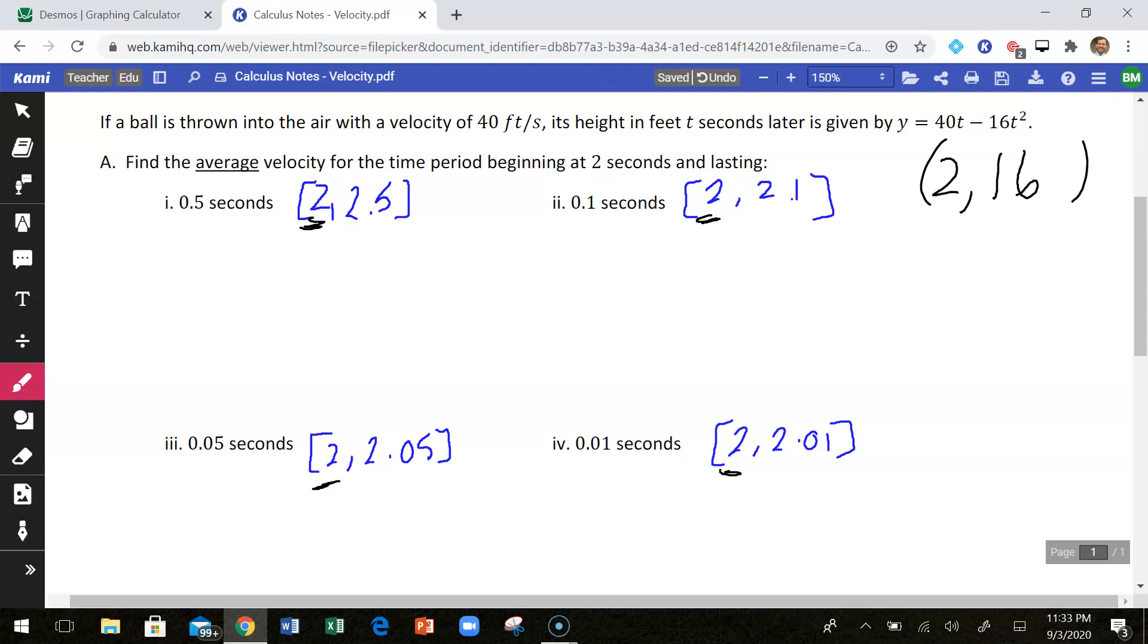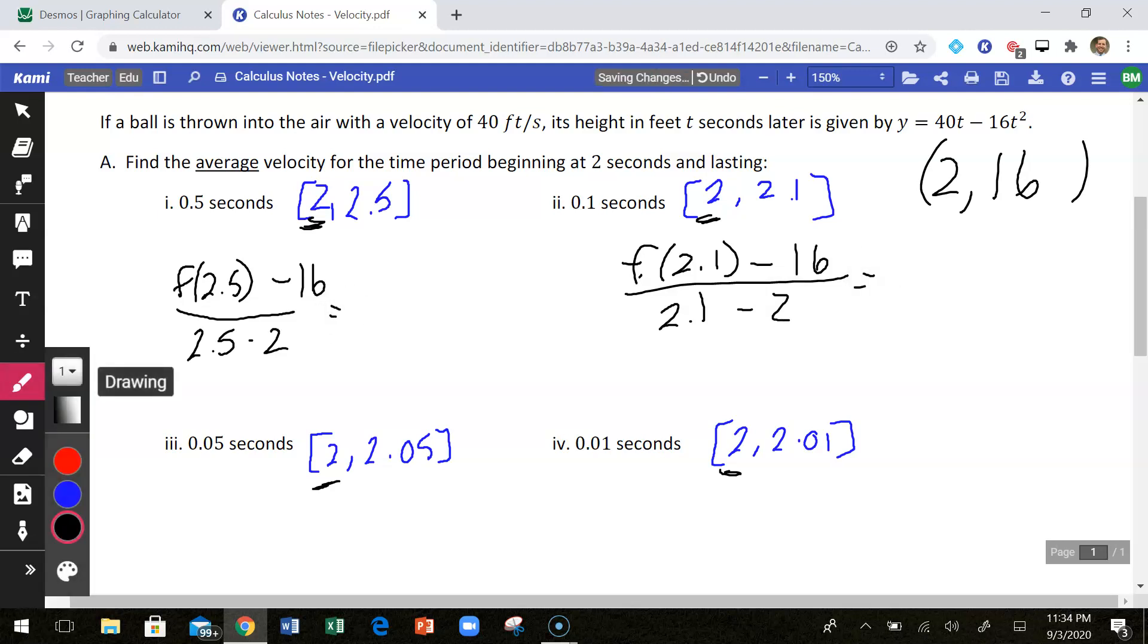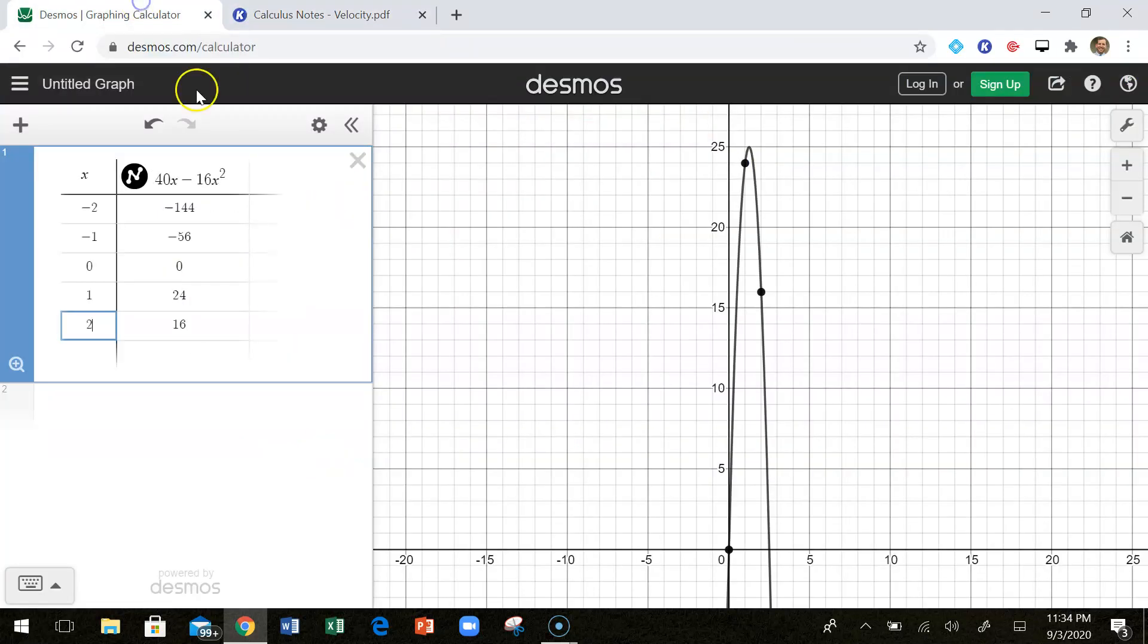So what I know is every single time, essentially what we have going on is we have f of our second x, which is 2.5, minus 16. That is our y value when we plug in 2. And then on the bottom, 2.5 minus 2. And then here we have like f of 2.1, whatever the y value is when we plug in 2.1, minus 16, over 2.1 minus 2, and so forth. And we're going to get these answers. So this is going to require me to go through and plug in that second x value every time into my function, 40t minus 16t squared, to get those y values so that we can find slope. I'm going to do this all at once using Desmos.